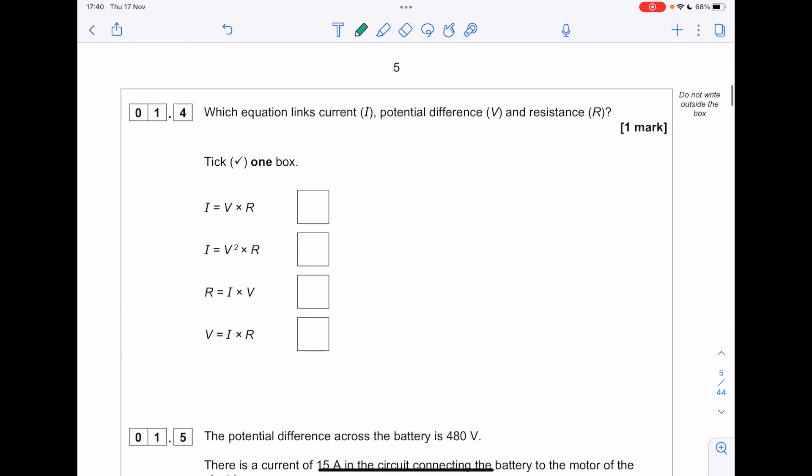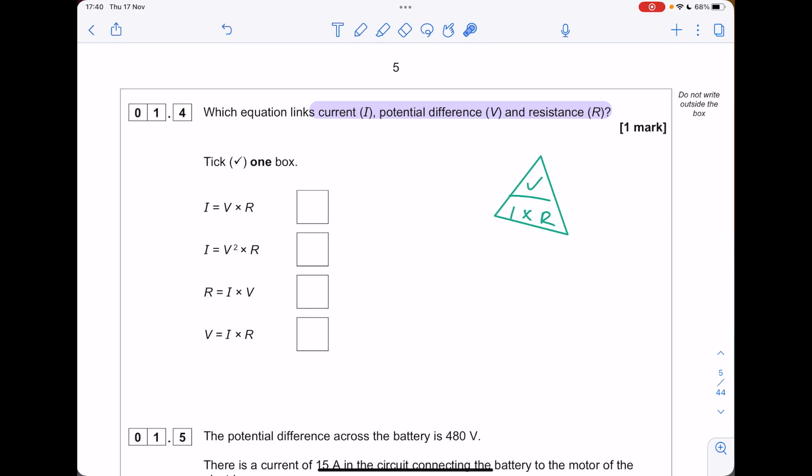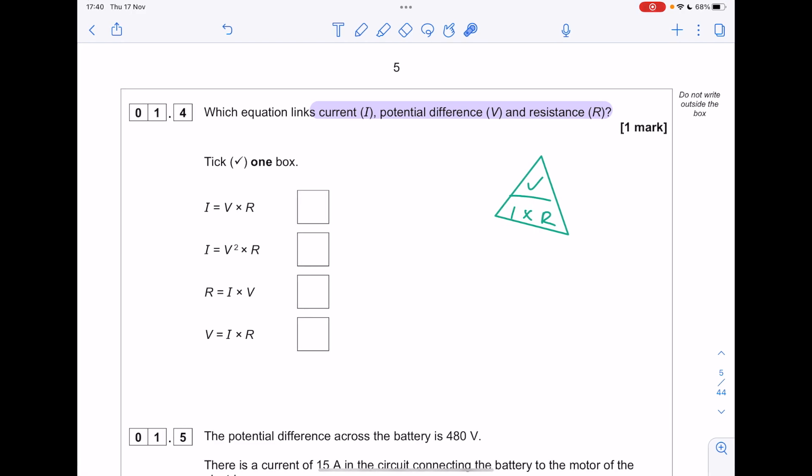Which equation links current, potential difference and resistance? I use V equals IR to help me here. Let's have a look if we have it in terms of I. So current is voltage divided by resistance. Neither of those are the same. What about if we have it in terms of R? It's voltage divided by current. What about in terms of V? V equals IR. So it's this one.